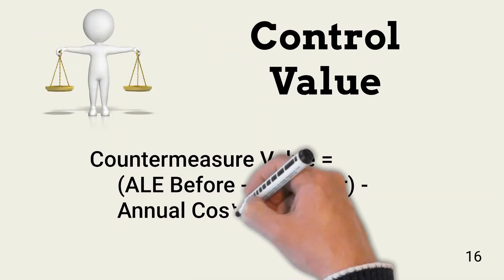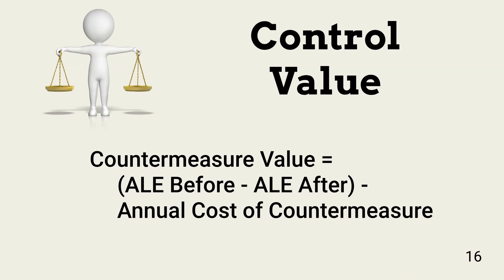Another way of looking at the value of a control or countermeasure uses a formula that subtracts the annual cost of a countermeasure from the difference between the ALE before implementation of the countermeasure and the ALE after its implementation. A countermeasure can be adjustment of existing controls or procedures, implementation of new controls or procedures, or paying for cyber insurance. If the countermeasure value is negative, the countermeasure might need an adjustment, or management might just accept the risk.